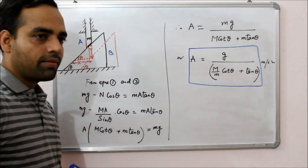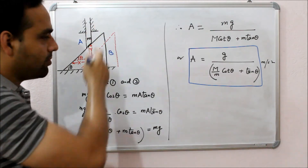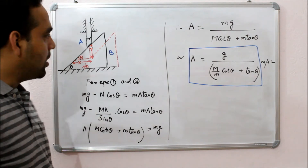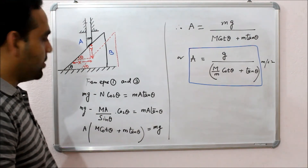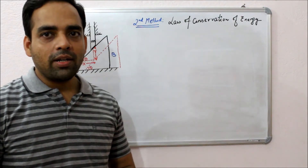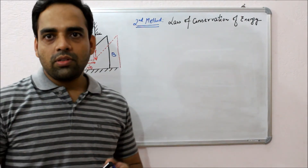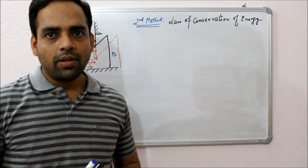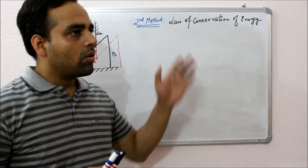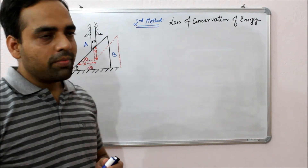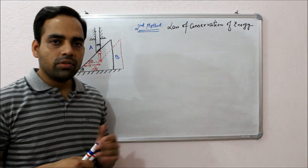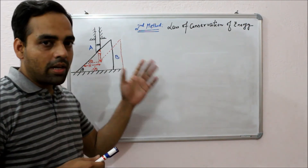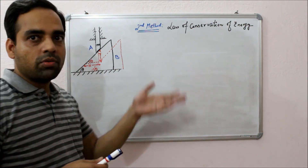So we have seen that we can easily find out the acceleration of the rod and wedge system using Newton's laws of motion with the help of the constraint relation. Now I am going to explain a relatively easier method to find out the acceleration of the wedge, which is the law of conservation of energy method. This method is relatively easy compared to Newton's laws of motion because in Newton's laws of motion we have to draw the free body diagram, which is a bit tricky, and we have to show all the forces acting on the bodies.